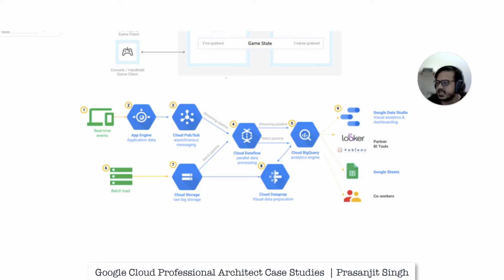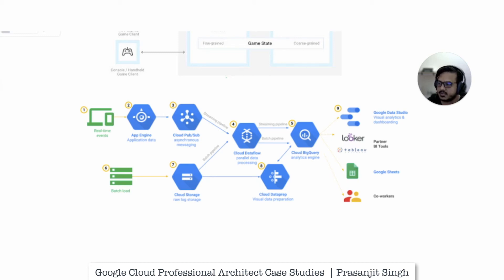Multi-regional GKE clusters with auto-scaling will be used for scalable environments based on gaming activity. Deployments will be done through a CI/CD pipeline using Cloud Repository, Jenkins or Spinnaker builds, Docker as the container platform, and container registries to store Docker images — along with infrastructure-as-code tools like Terraform. CDN and the global load balancer will distribute content across edge locations closer to users, reducing latency and helping meet service level objectives.